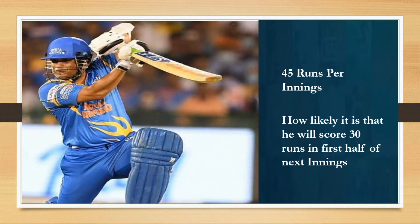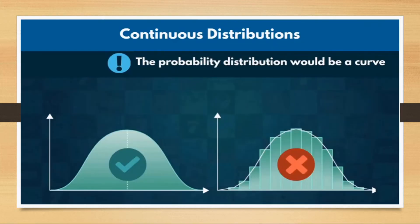Now let's move to continuous distributions. With continuous distributions, the probability distribution will be a curve, unlike the case of discrete distributions where it was unconnected individual bars.